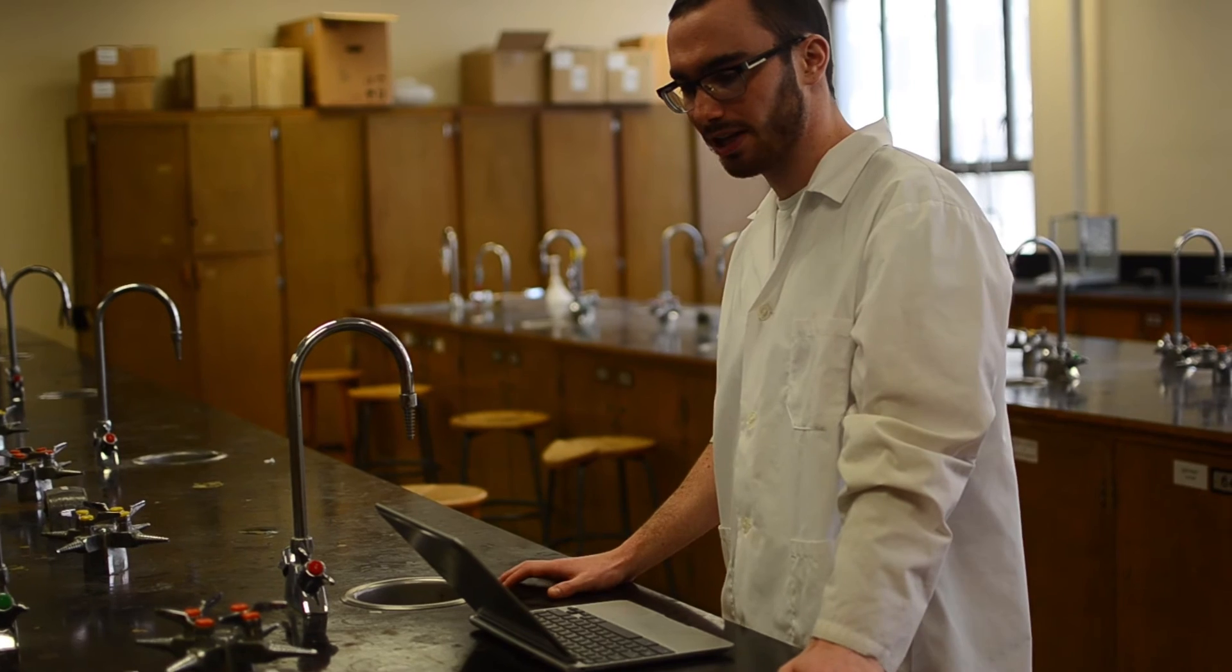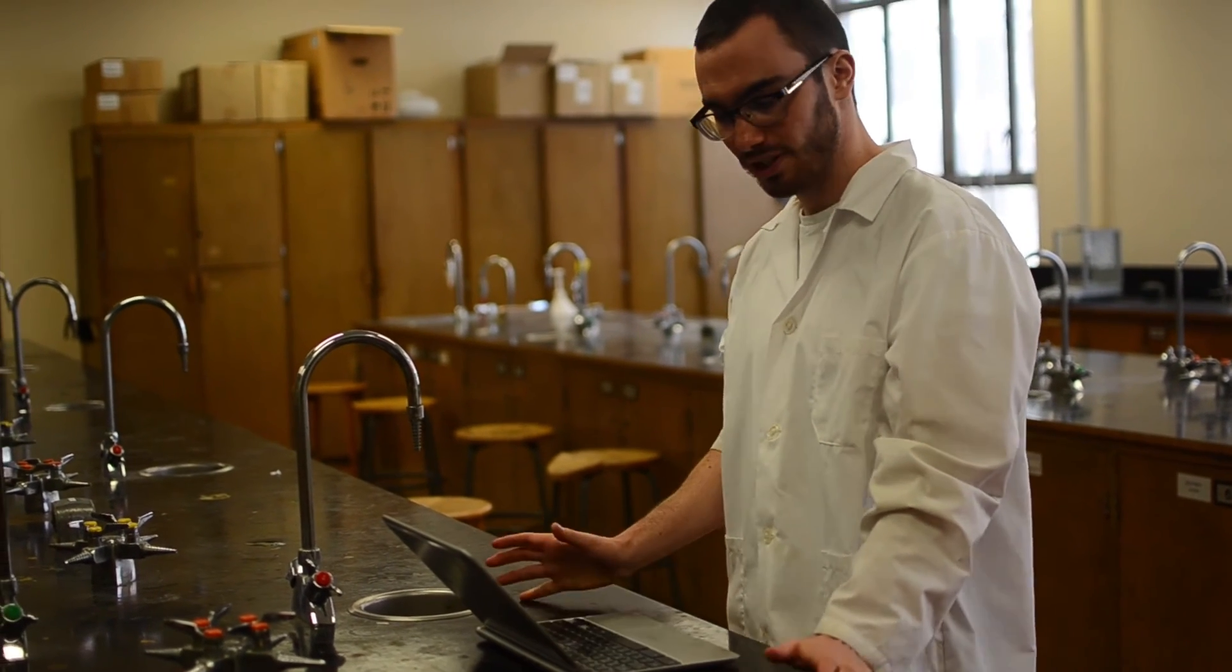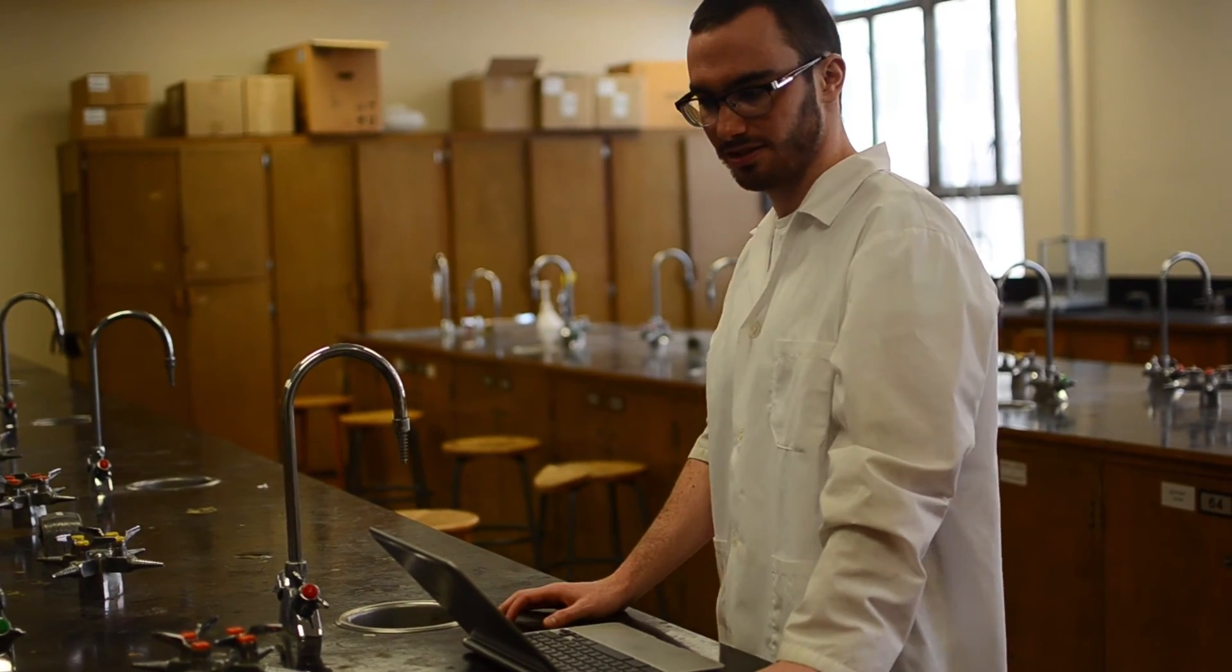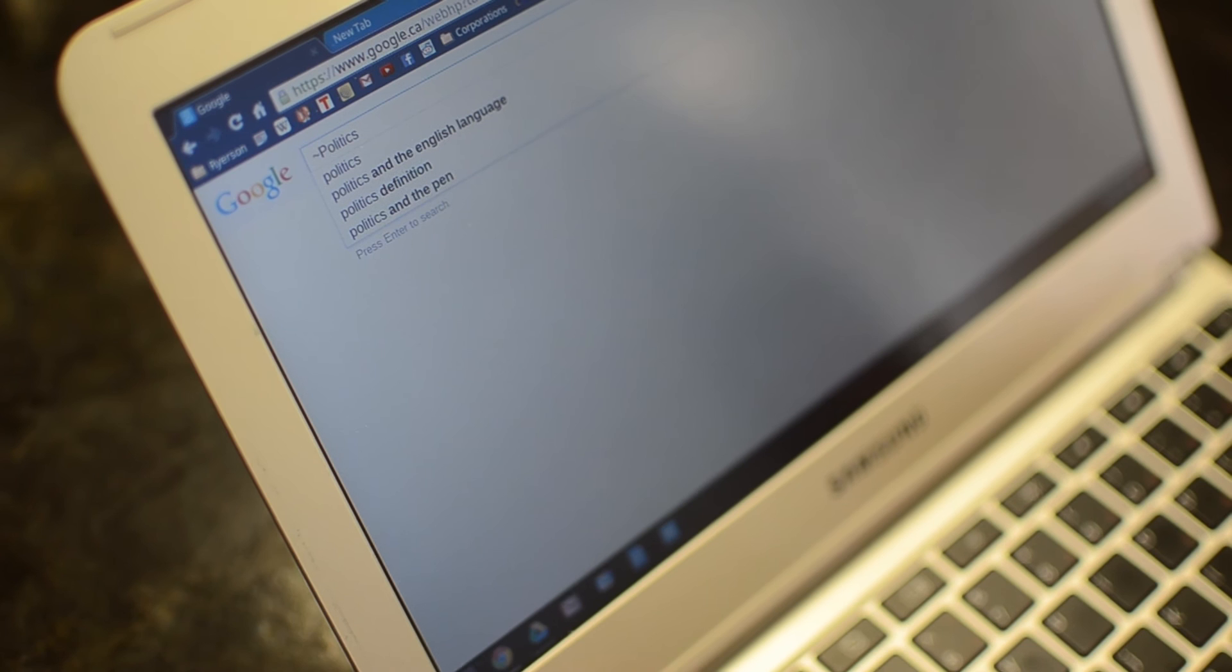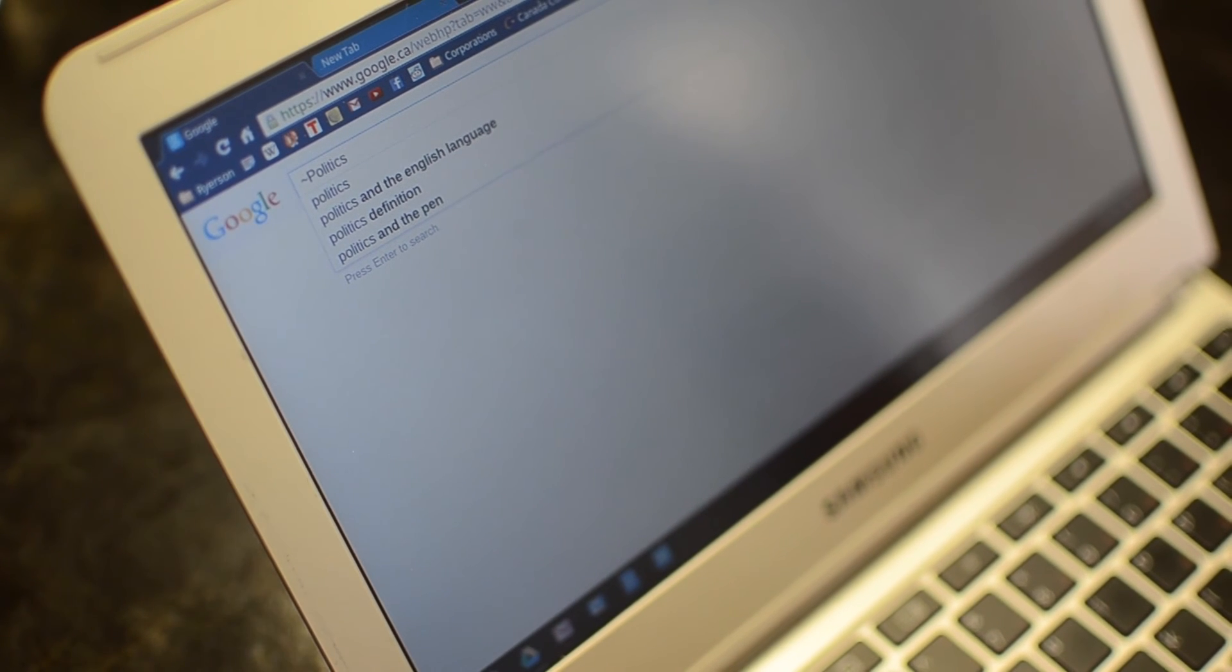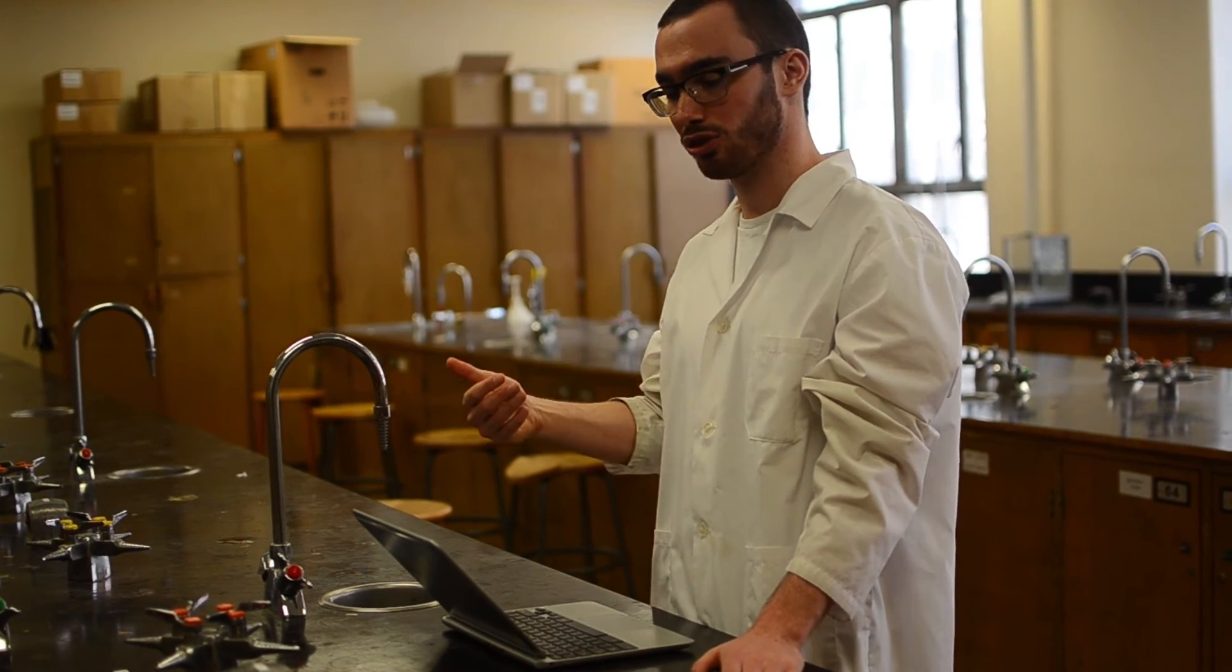This one's going to come in handy for you guys when you want to find synonyms for a word or a topic that you're looking for. So for example, let's go with politics. Say you're searching politics in Google. What you're going to do, you're going to put your tilde sign, which is probably underneath your escape button, before the word politics, and what that's going to do is it's going to search politics, but it's also going to search all the synonyms to politics.